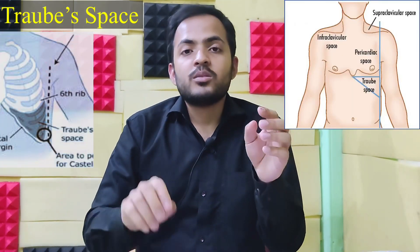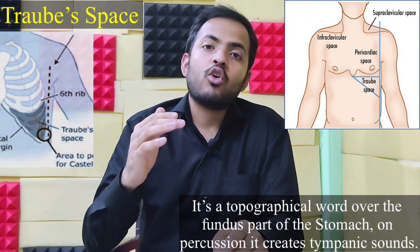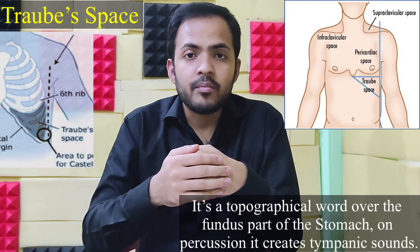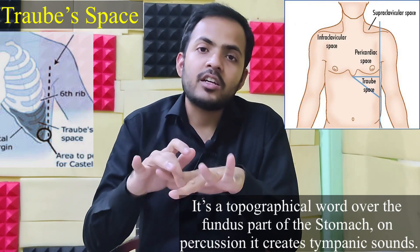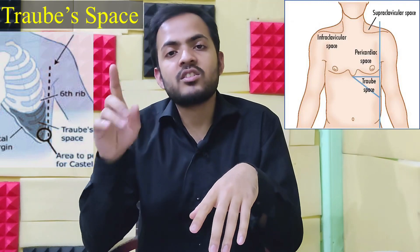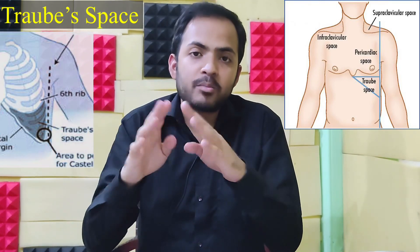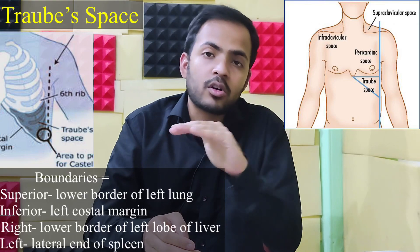The details of procedures and conditions will be covered in the surgery chapter. Next is the Traube's space — a topographical area over the fundus part of the stomach. On percussion, it creates tympanic sounds. The types of percussion sounds will be discussed in the clinical chapter.